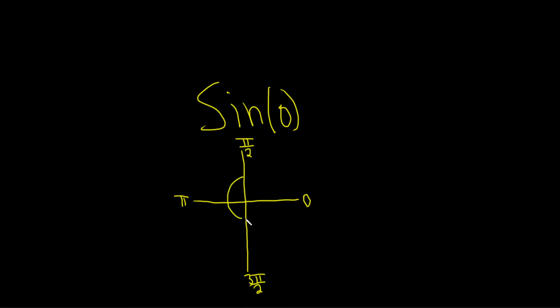On the unit circle, every ordered pair has the form cosine theta, comma, sine theta.